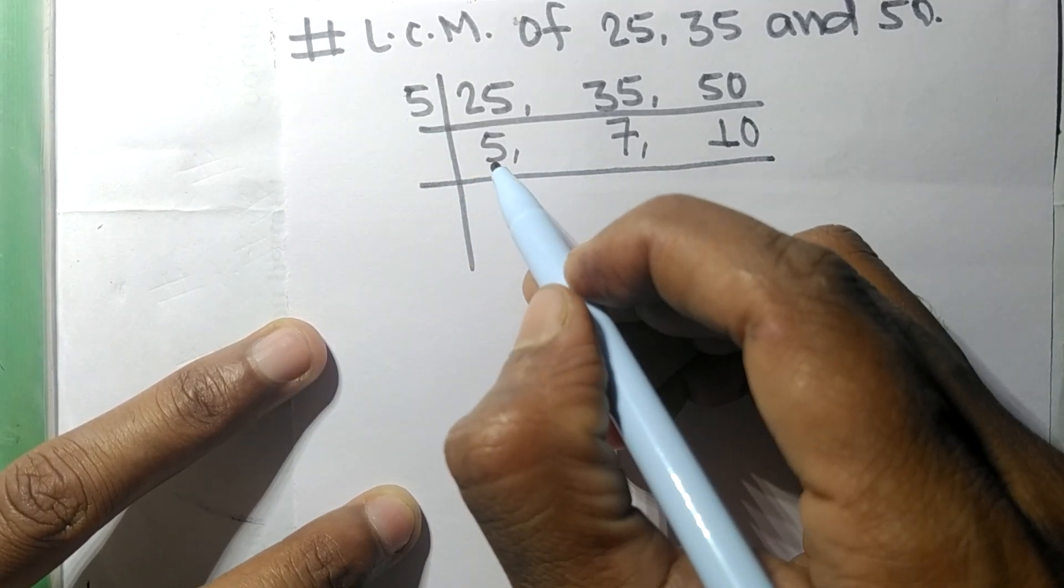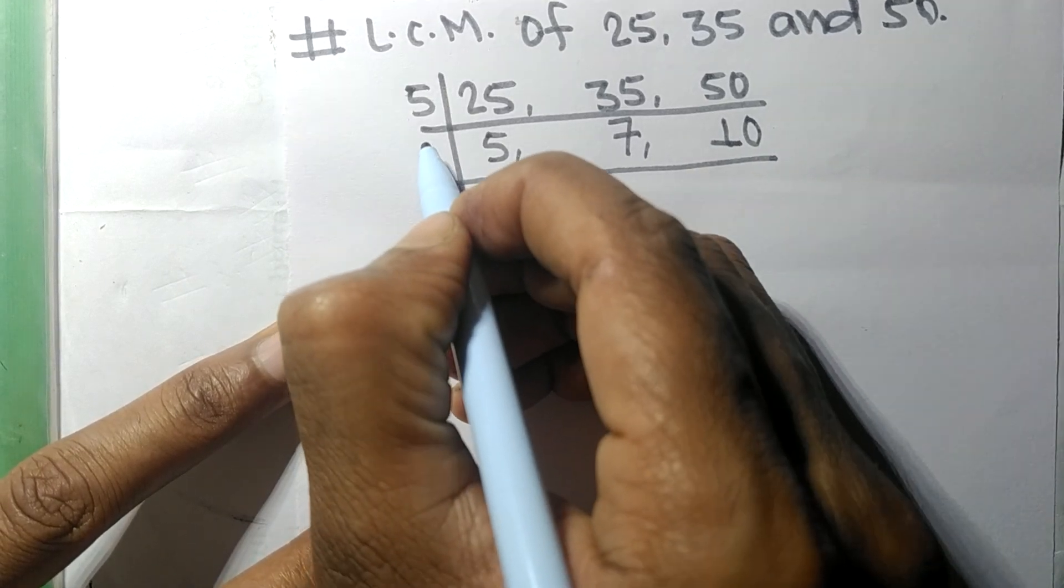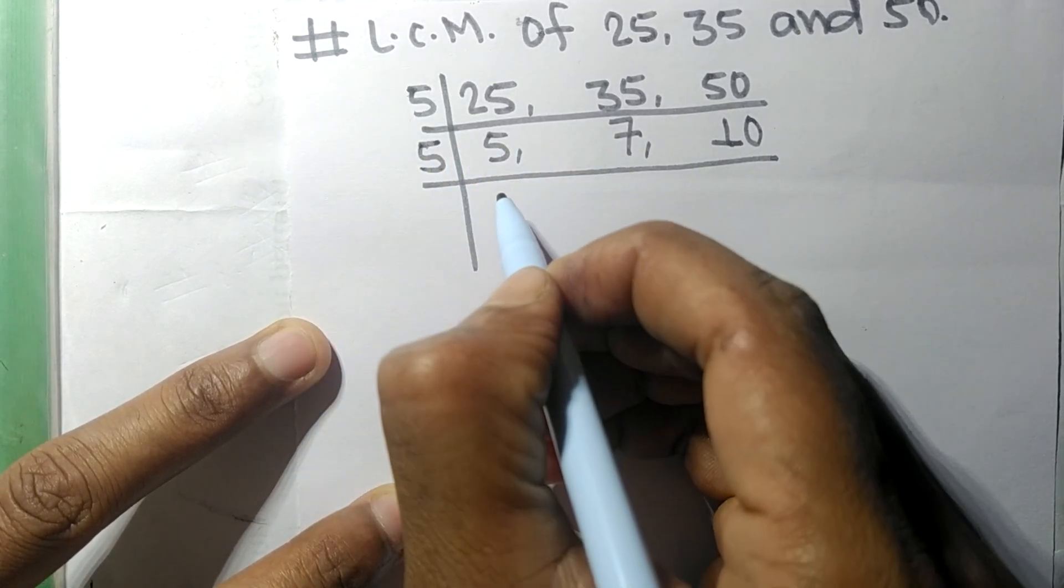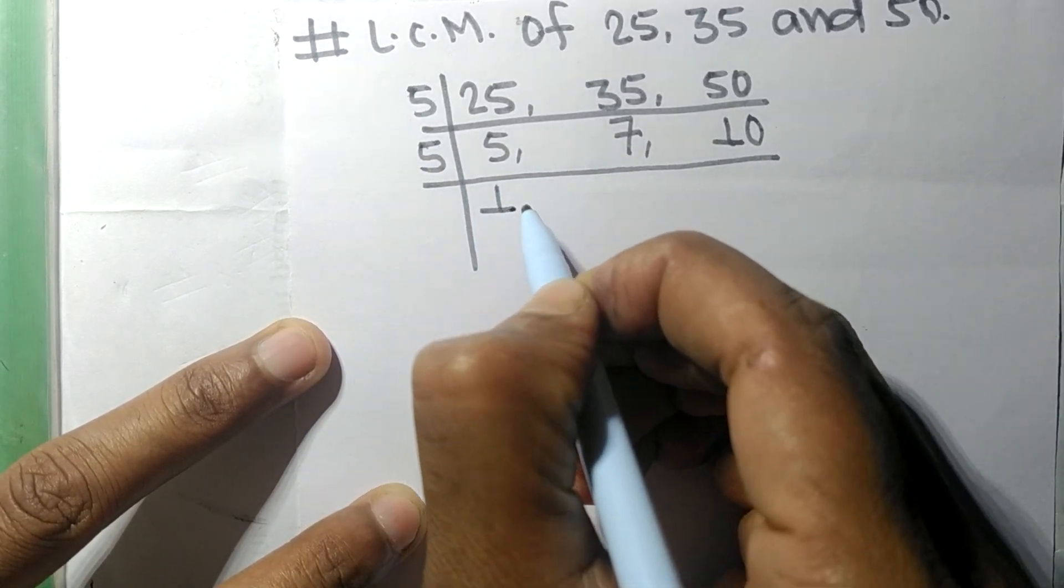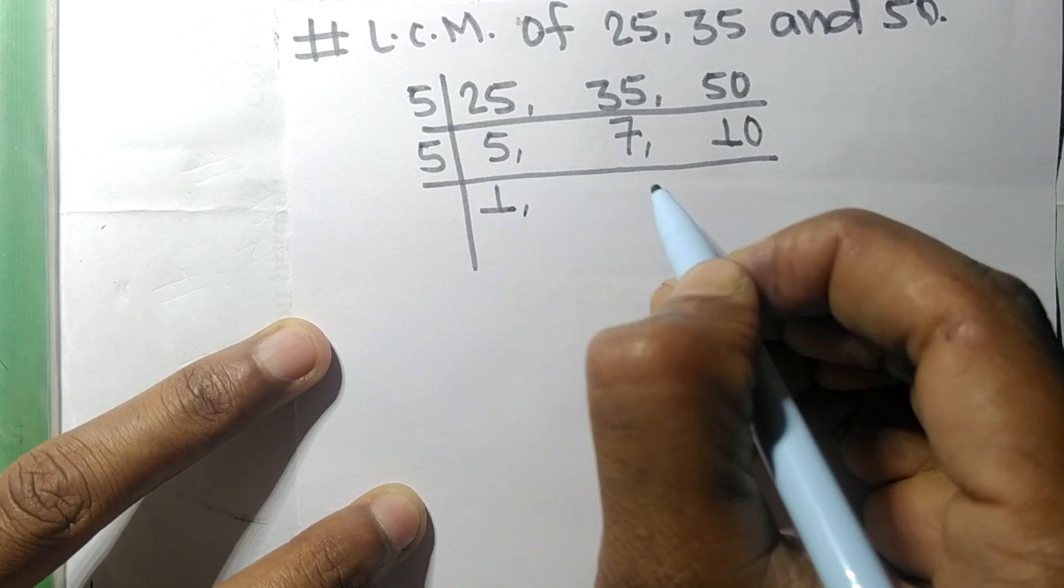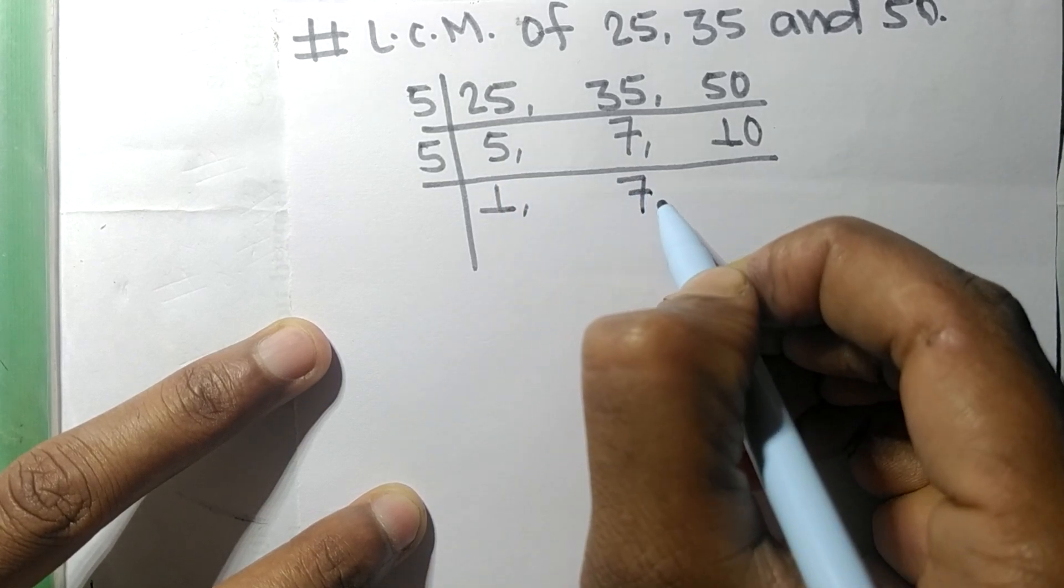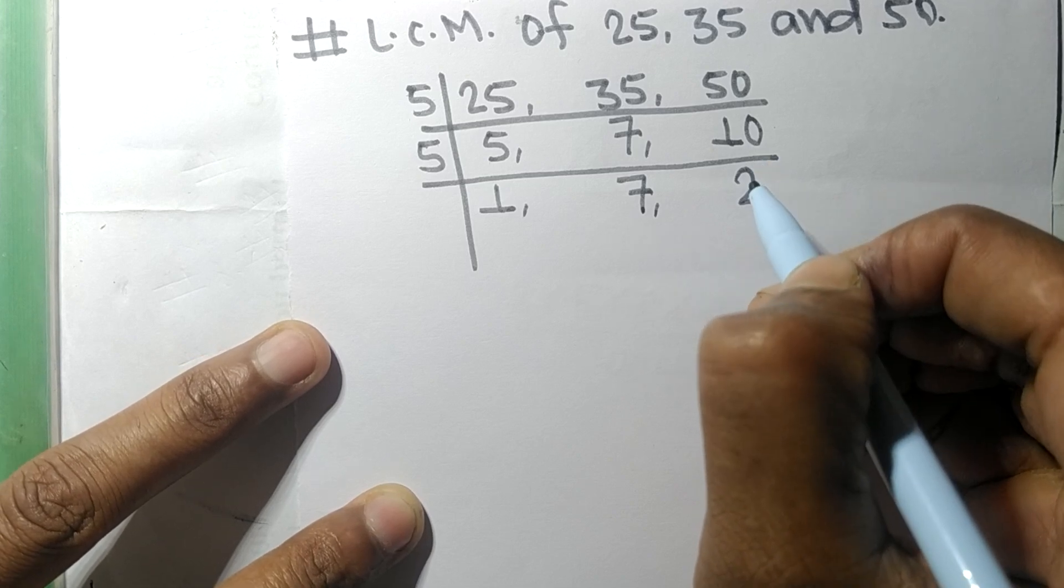So 5 times 1 means 5, 7 is not divisible so it is same, 5 times 2 means 10.